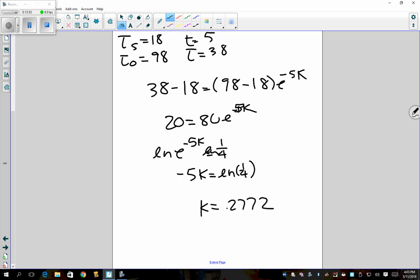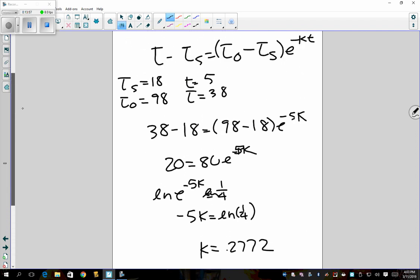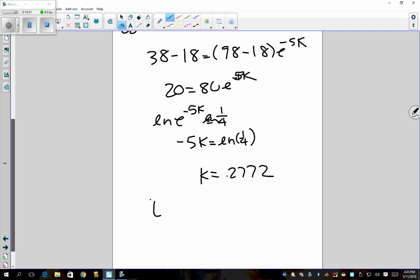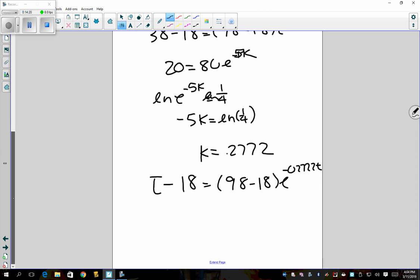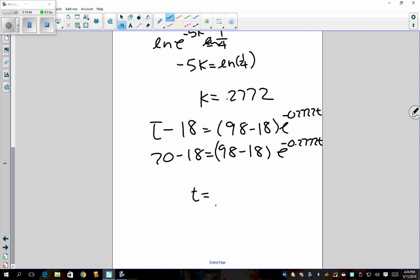And so now I'm asked to find how much longer it will take the egg to reach 20 degrees Celsius. So what I'm going to do is I'm going to plug in 20 for T. And basically I'm going to kind of do the same thing and I'm going to solve for T. And so when we do all this we should get T is equal to about 13.3.